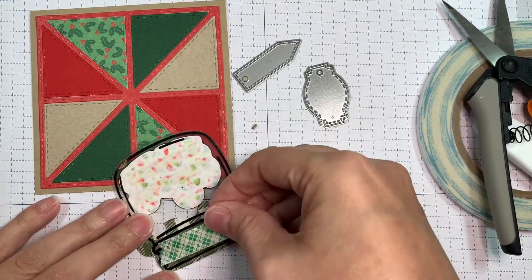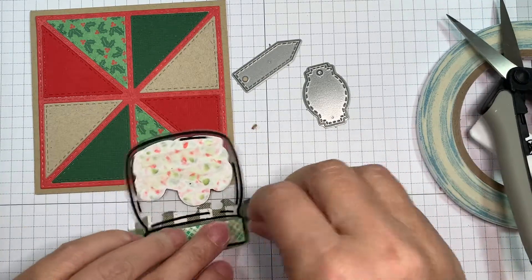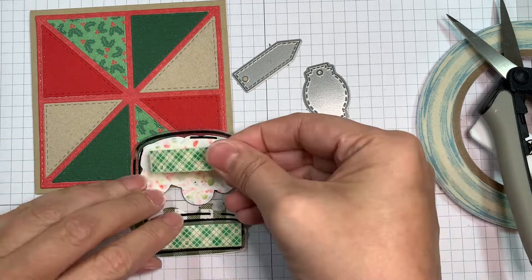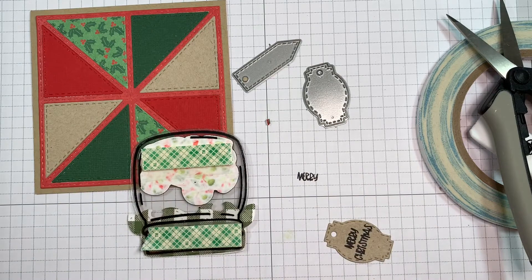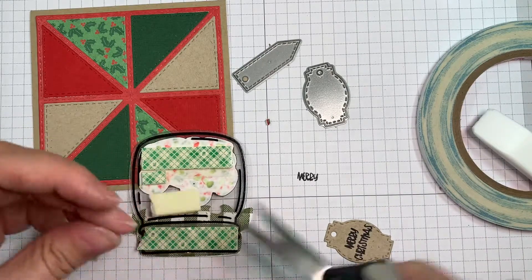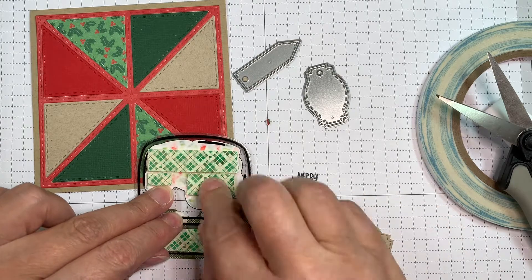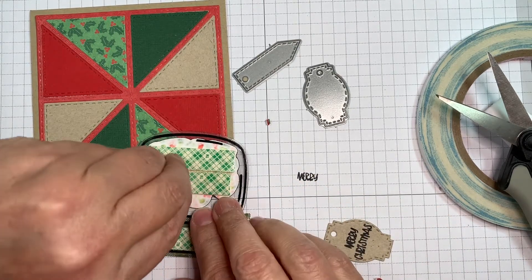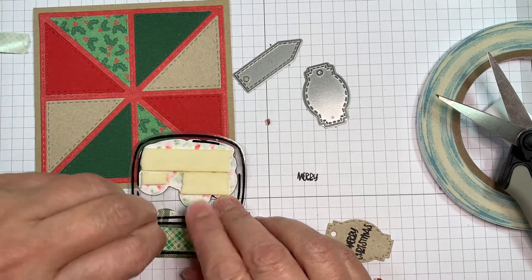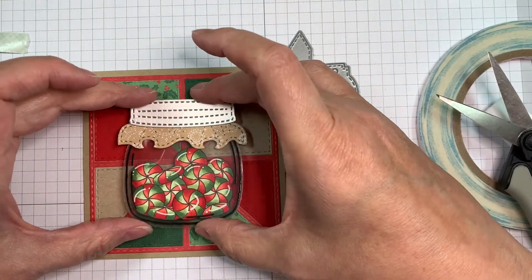So now I'm going to pop up this jar using my 3M foam tape. And I'm just putting some behind the lid and then behind the candies. And that way it pops it all up. So it makes it still look popped up. But at the same time, you're not going to see any foam tape sticking out from behind that clear acetate. And there we are. So I'm just popping that all on. I'll peel off the backing. And then I'm going to pop that in the center of that triangle square mat die. Isn't that a great background? Like, I love the stitching. I just think it looks just so pretty.